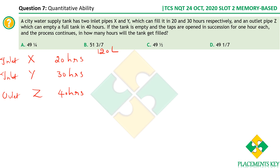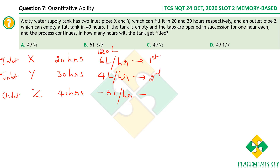Efficiency of X: 120/20 = 6 liters/hour. Efficiency of Y: 120/30 = 4 liters/hour. Efficiency of Z (outlet): 120/40 = 3 liters/hour. The taps are opened in succession, one hour each: X in hour 1, Y in hour 2, Z in hour 3, then the cycle repeats.